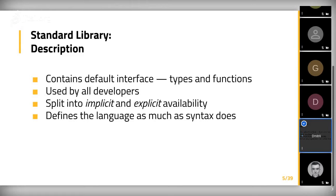The standard library is used by all developers. Since it's standard, all developers should be aware of it and use it by default. Usually a standard library is split into implicit and explicit scopes — some types and functions are available out of the box, and for others you need to bring them into scope by importing modules or namespaces. The standard library actually defines the programming language as much as syntax does, because it's the language you use to write your programs, something everybody understands.